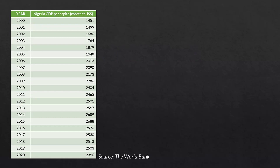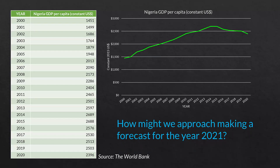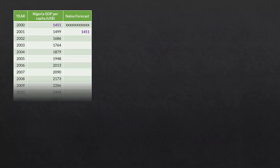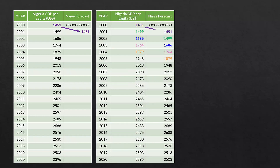These first few slides I will go through very quickly — they are the same slides from previous videos. What we're looking at here is the Nigerian GDP per capita from the year 2000 to the year 2020. The question we've been asking is how might we approach making a forecast for the year 2021? We use the naive forecast, where the forecast for the next period is just the actual value from the prior period. The Nigerian GDP per capita in 2000 was $1,451, so that becomes our forecast for 2001, and we continue that process all the way down the columns.